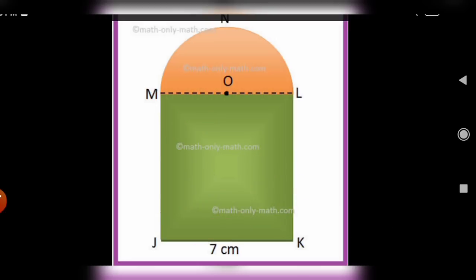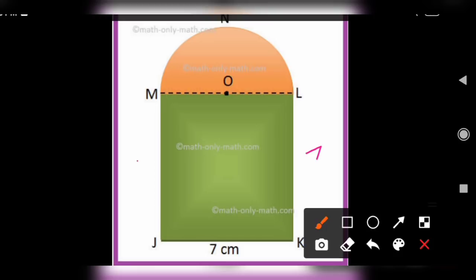If it is a perimeter, you have to add all this values: 7 plus 7 plus 7. And then you have to find the circular region, this region. Circumference of the circle. Just try this.